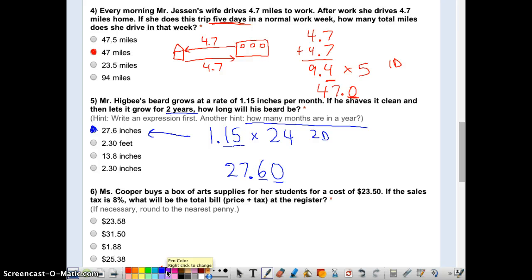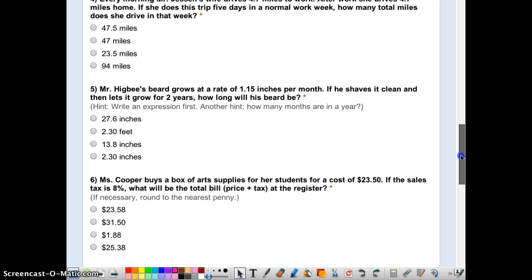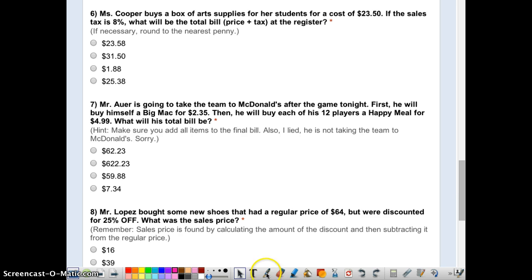Ms. Cooper is buying art supplies. Remember that how tax works is price plus tax equals the bill. And the tax is not a percent. Percent doesn't mean money, it means part of money. So the price here is 23.50. To find out the tax, we need to do 8% of 23.50. How do I do that? I need to do 0.08 times 23.50.